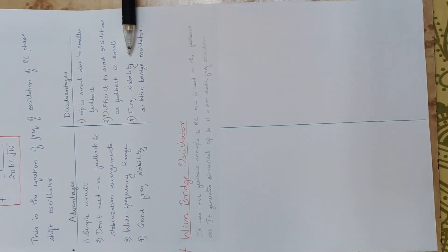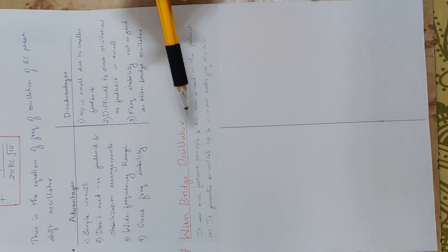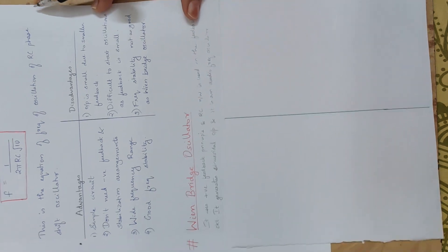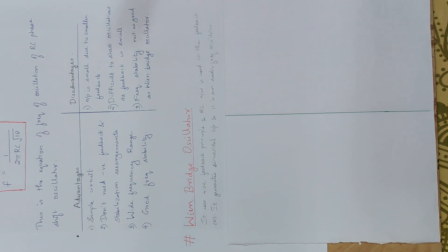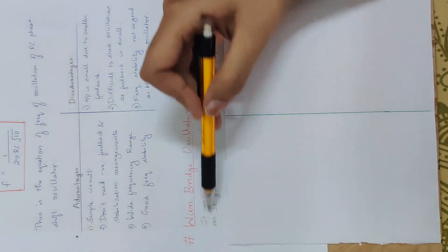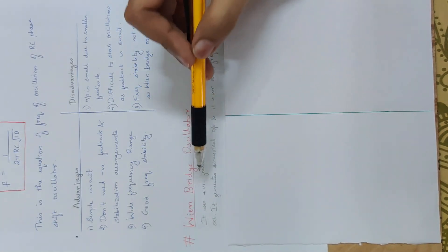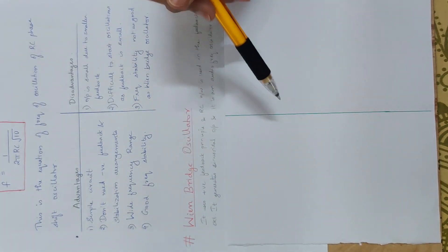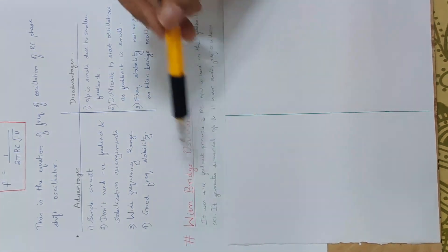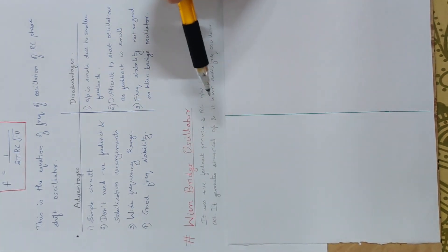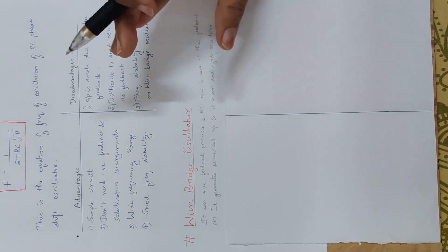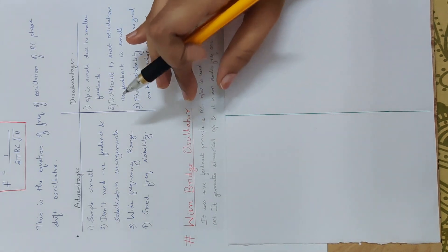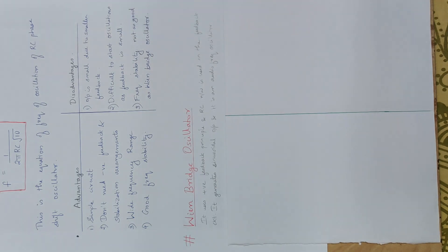The frequency stability of the RC Phase Shift Oscillator is not as good as the Wien Bridge Oscillator. That is the main reason we add a Wien Bridge circuit — to improve frequency stability.